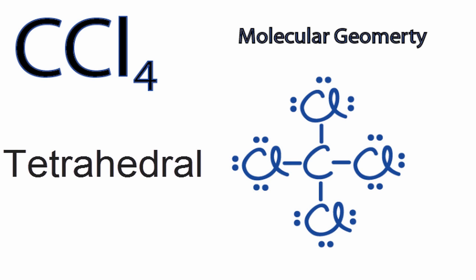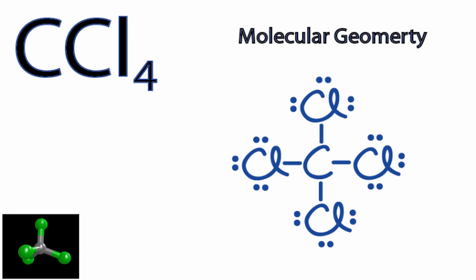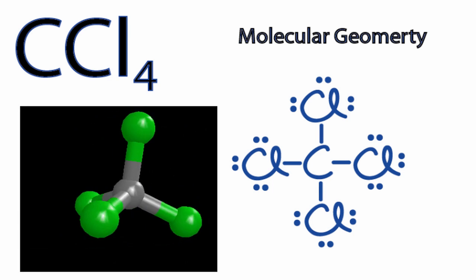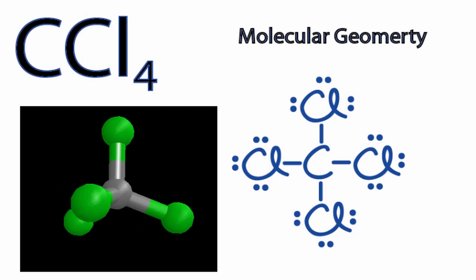When they do that, we're going to have a tetrahedral molecular geometry, and that's going to look like this. The carbon will be in black, and then the chlorines are green. So you can see that they're spread out pretty much as far away from each other as they possibly can.